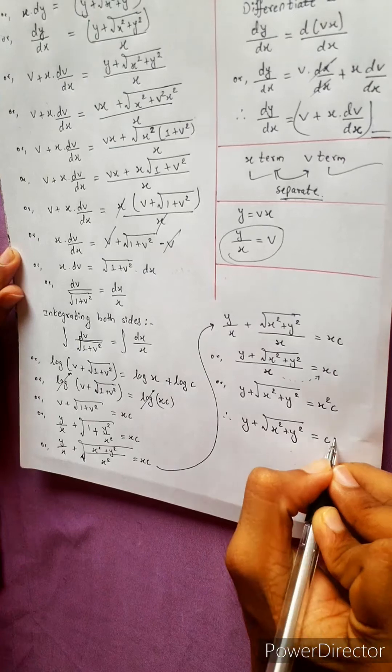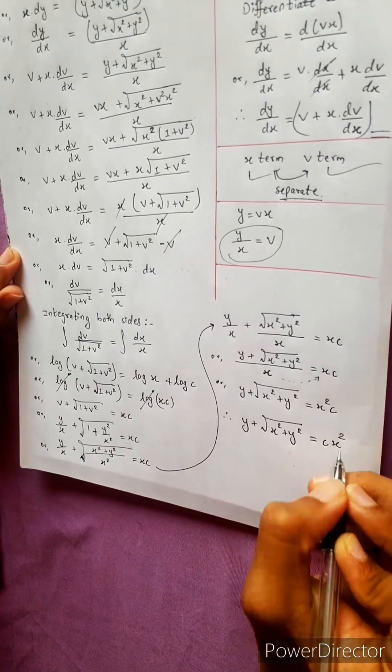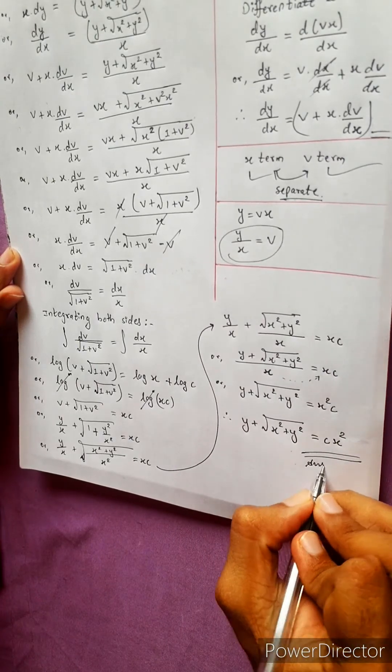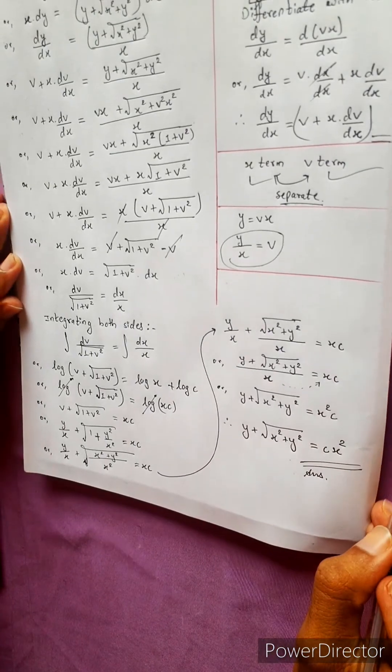Final answer: y plus under root of x squared plus y squared equals to cx squared. Here is your answer.